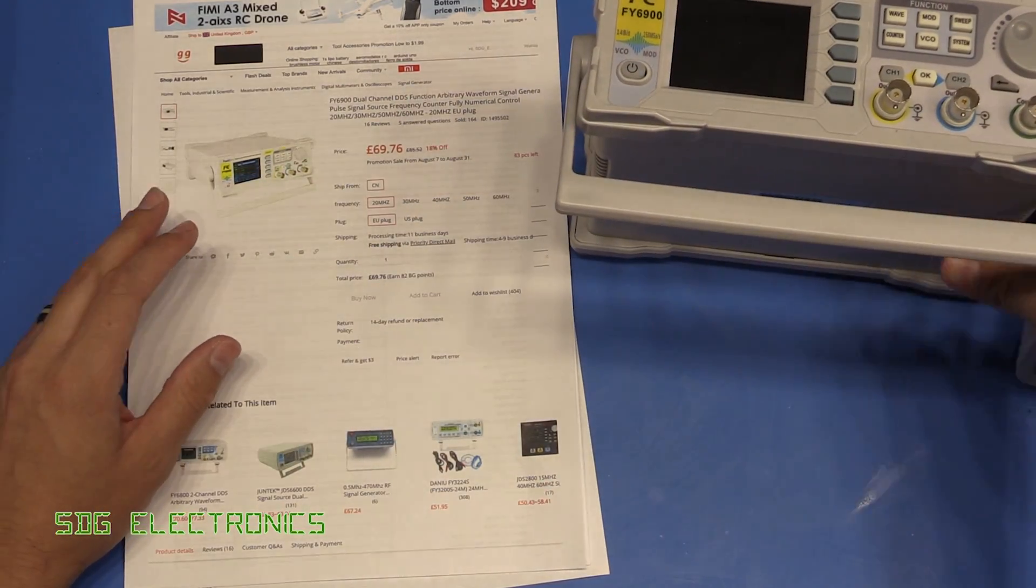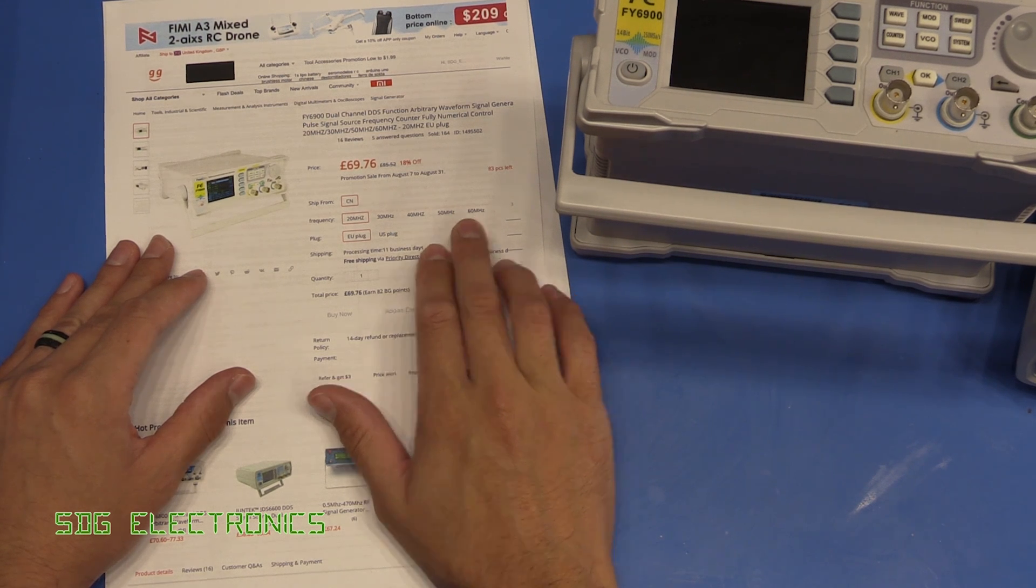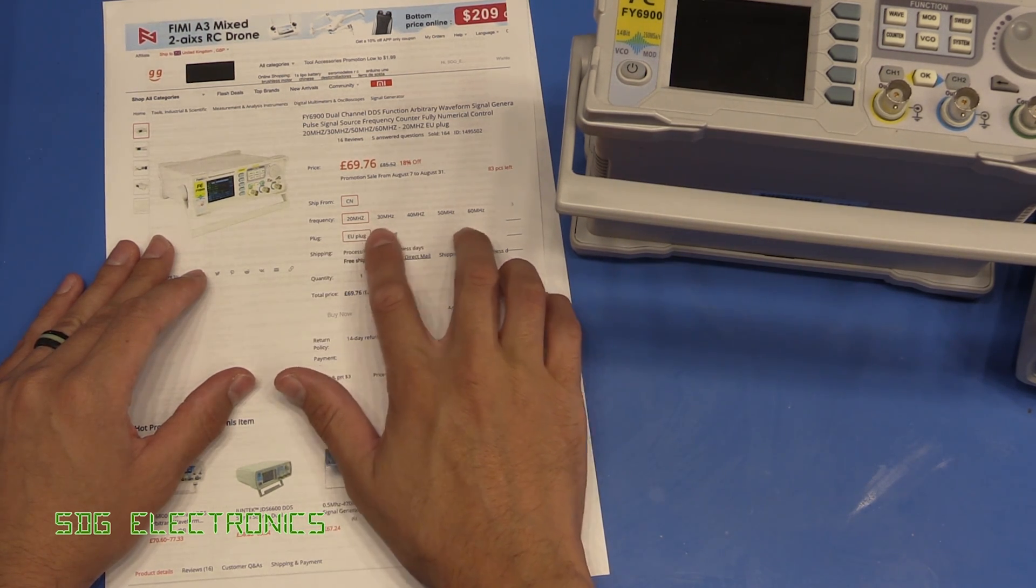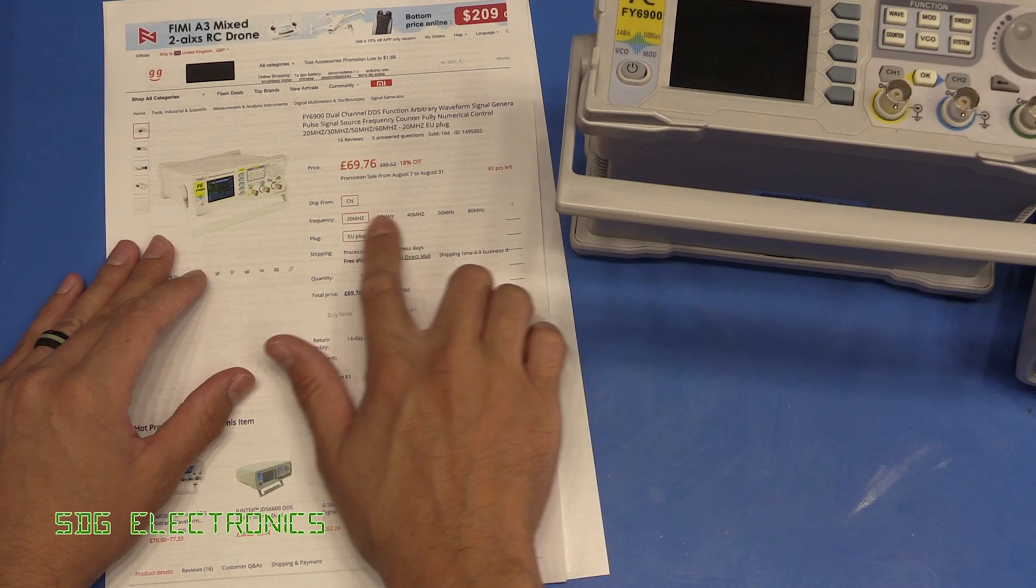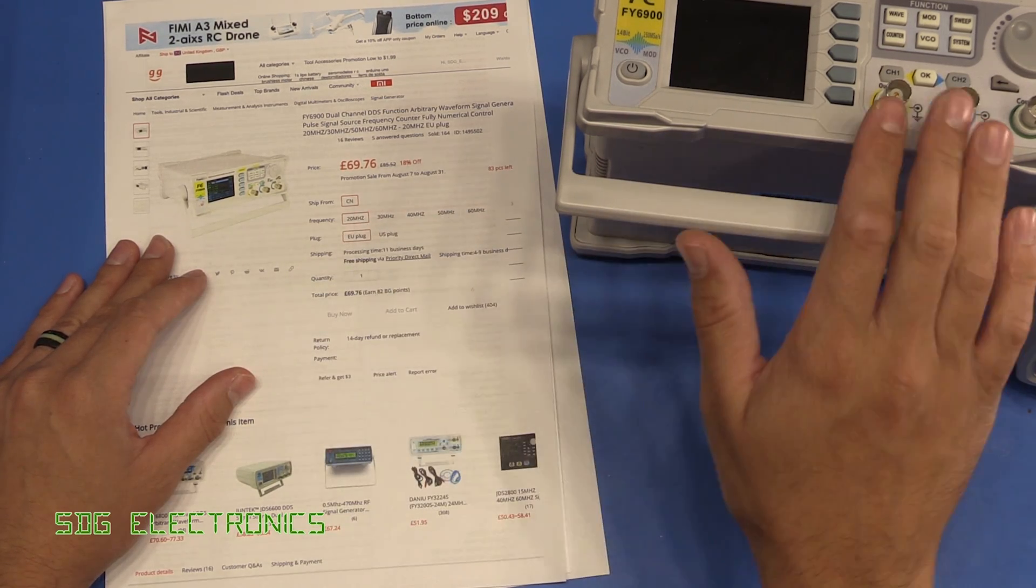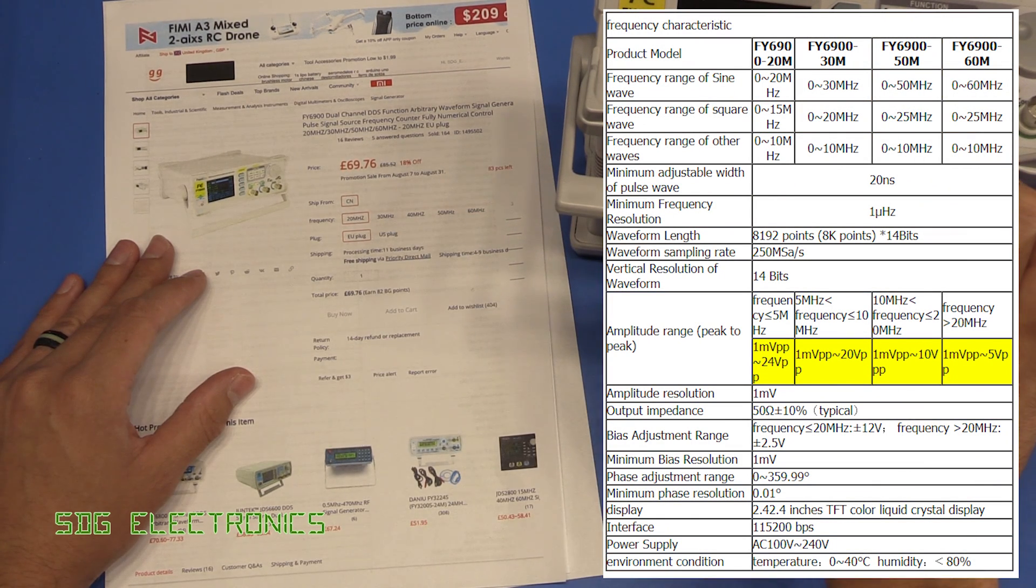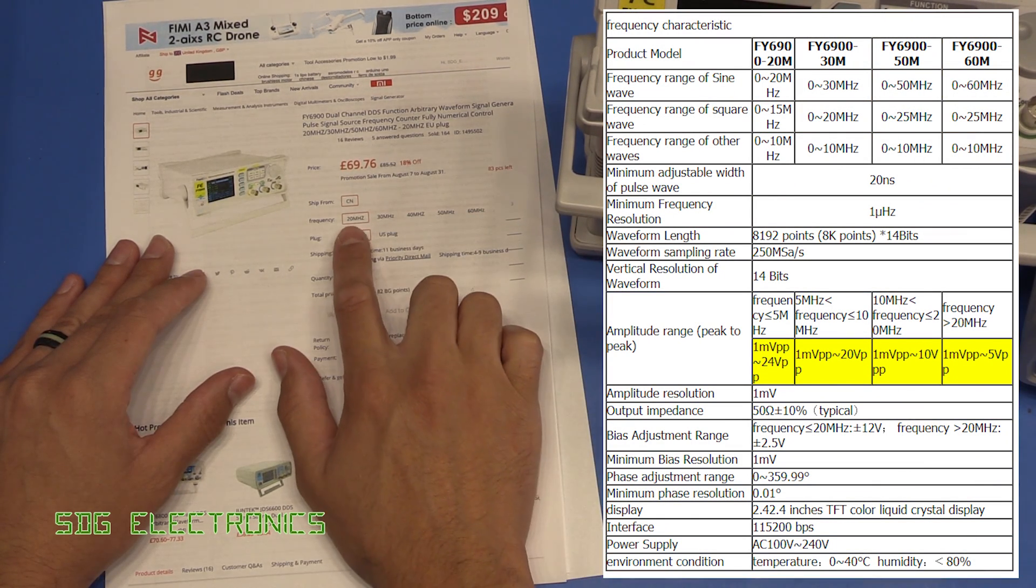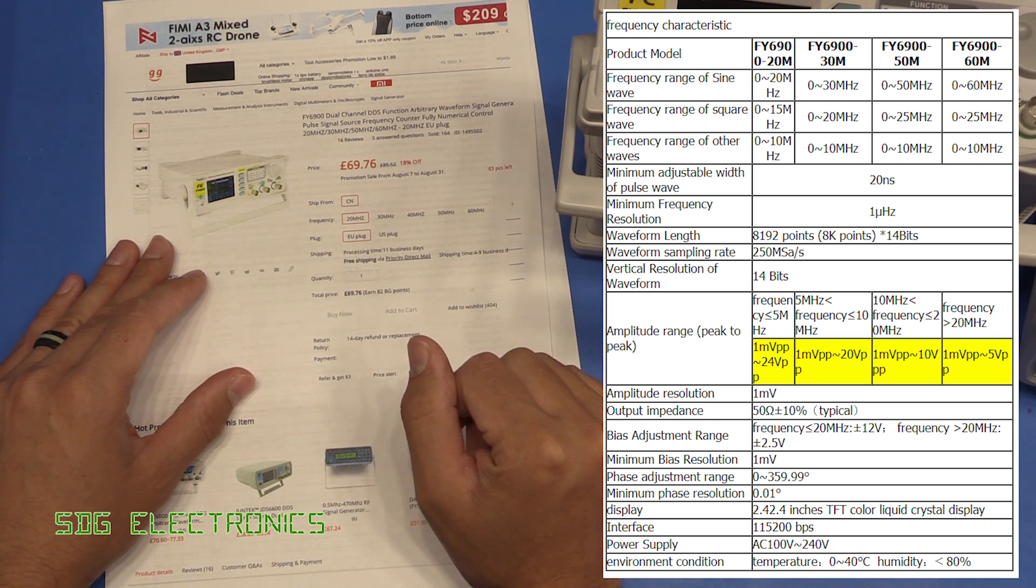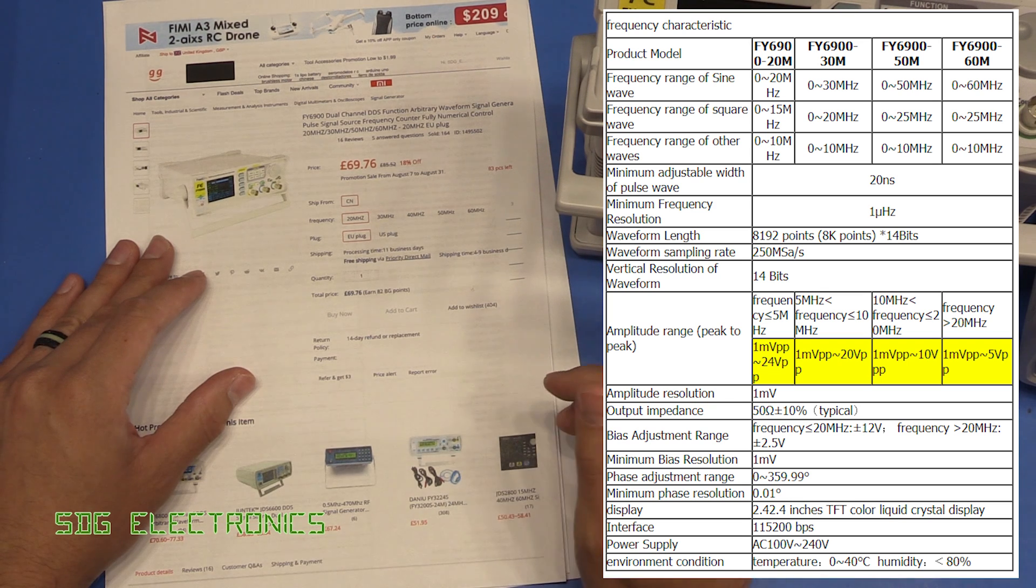This was sent to me by Banggood. I've received the 60 megahertz version but there are different versions available. In addition to the bandwidth changing, the output voltage capability changes. The 60 megahertz version can only output up to 5 volts peak-to-peak, while the 20 megahertz version can output up to 24 volts peak-to-peak.